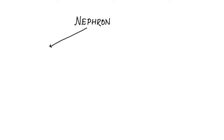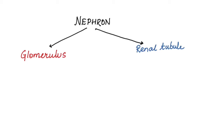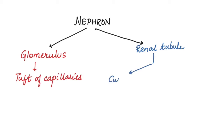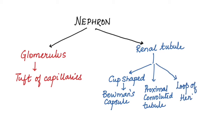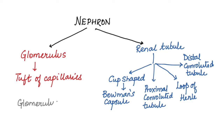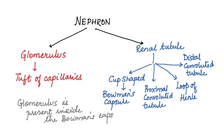Let us see what this cup-shaped part and the tubular part are. The nephron has two parts: the glomerulus and the renal tubule. The glomerulus is a tuft of capillaries, and the renal tubule is a tube that has different parts to it. It begins with a cup-shaped portion called the Bowman's capsule. The tubule then coils to form the proximal convoluted tubule, which then forms a loop-like structure called the loop of Henle, and further forms a coiled part called the distal convoluted tubule. The glomerulus, or tuft of capillaries, is present inside the Bowman's capsule.